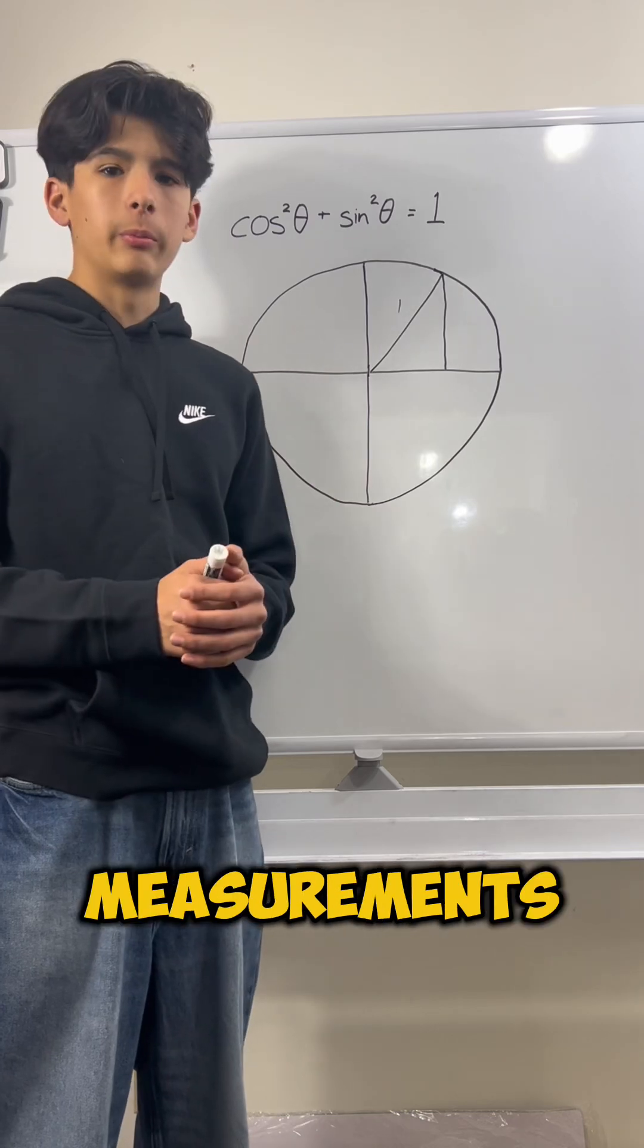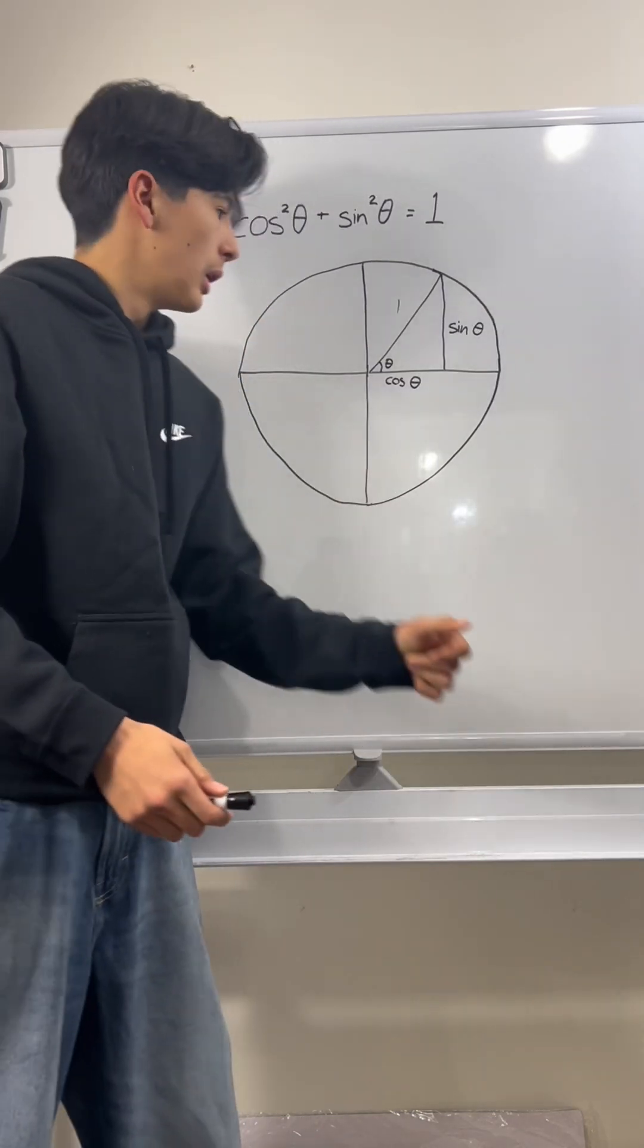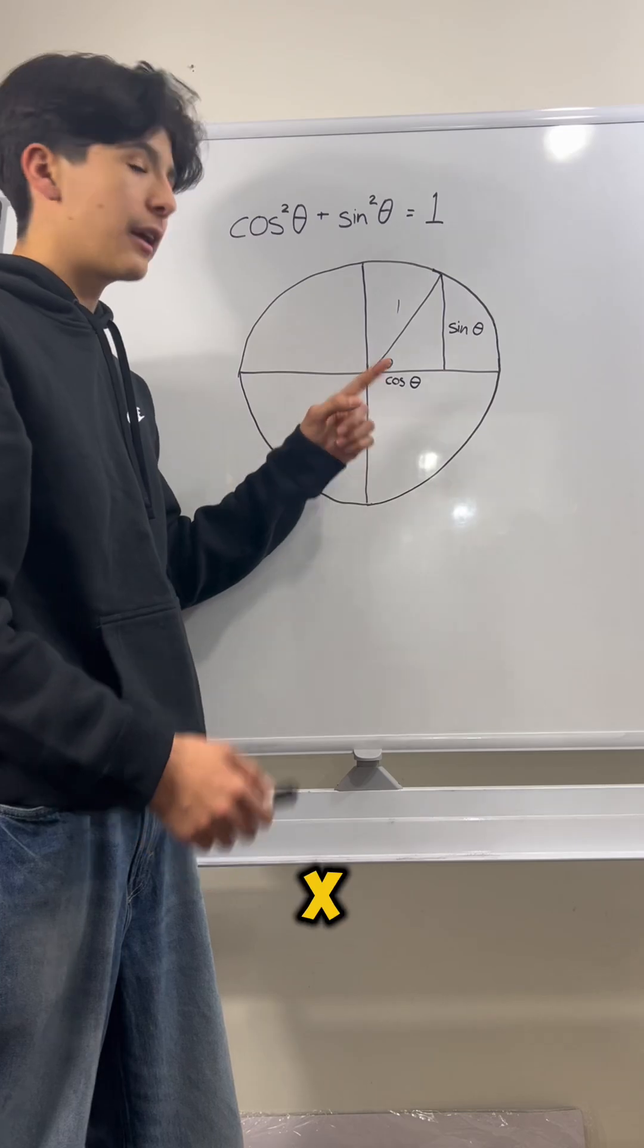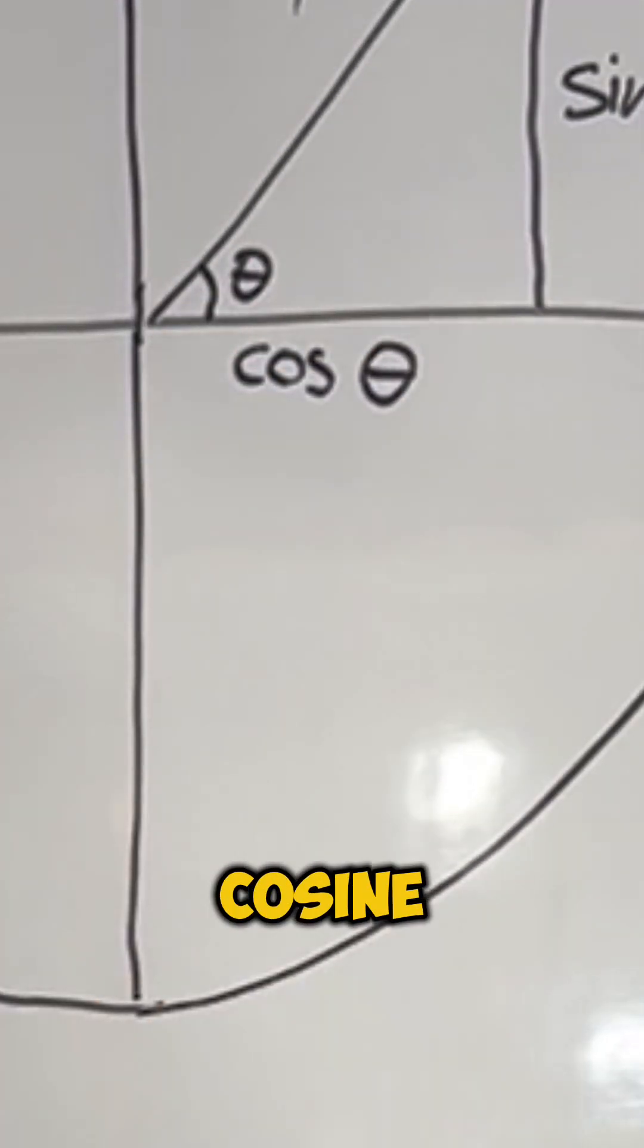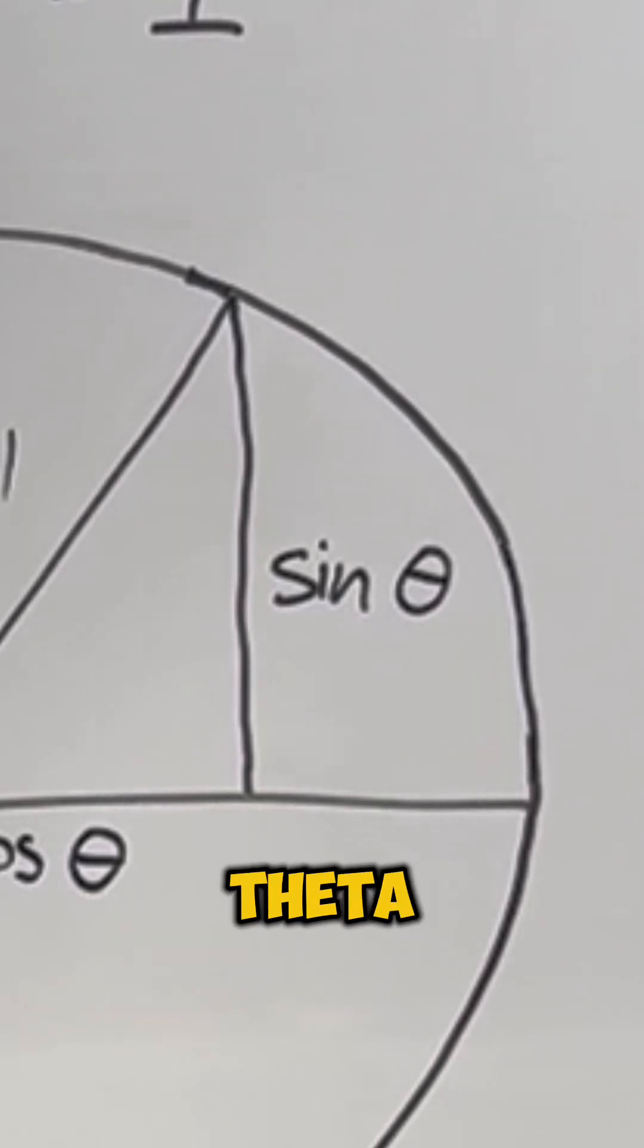Let's add a few more measurements to this unit circle. I've labeled this angle between the radius and the x-axis theta. And I've labeled the measurement of this side cosine of theta and this side sine of theta. But why is that?